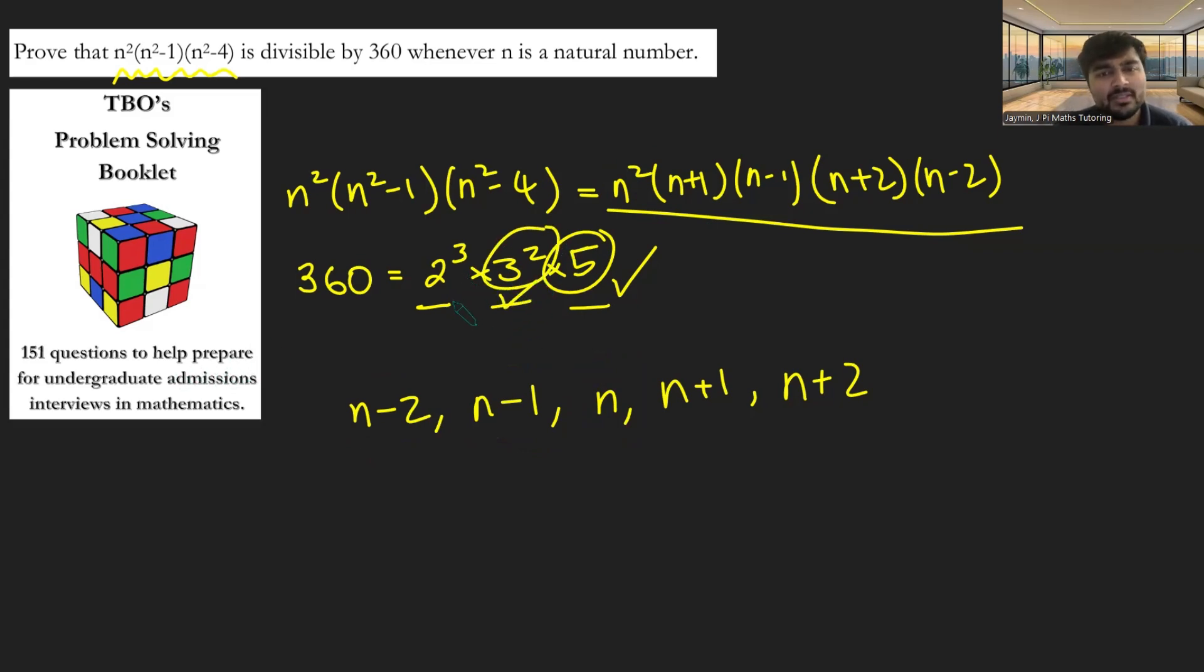What about 2 cubed? Well, if n minus 2 is even, then so is n, and so is n plus 2, and you get 2 times 2 times 2. Nice and easy. You get 2 cubed. But what if that's not the case? What if instead n minus 1 is even? Well, that means n plus 1 is even, and you get 2 lots of 2, which is 4, but we're still missing one more 2.